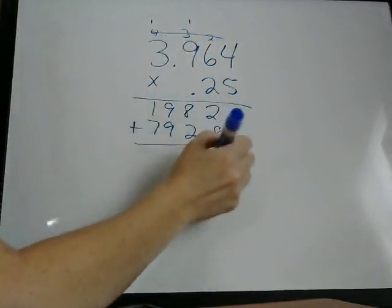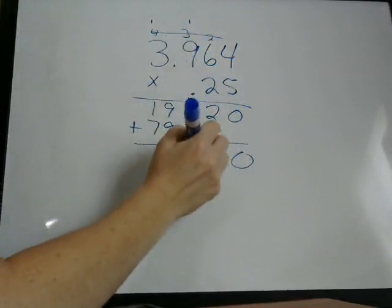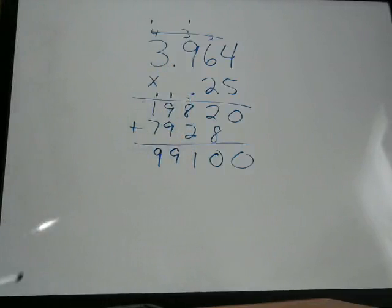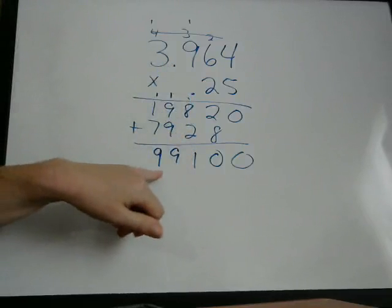Then you add these up: 0, 10, 11, 19, 99. So we're left with this number.